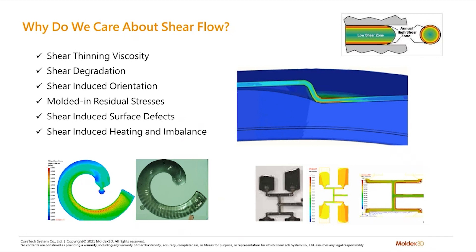Anything that's happening along the surface — flow marks, tiger marks, things like that. And lastly, we'll talk about shear-induced heating and imbalance. There's also a phenomenon that is pretty common in the plastics industry these days where shear can create some issues even within the same mold.